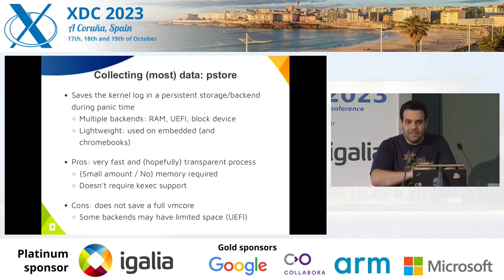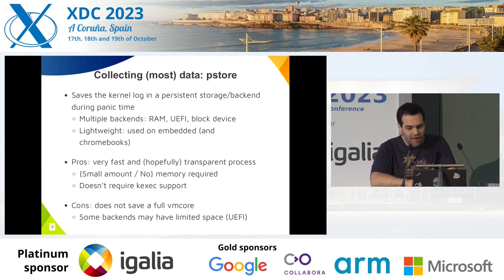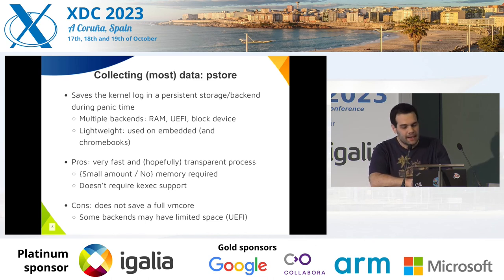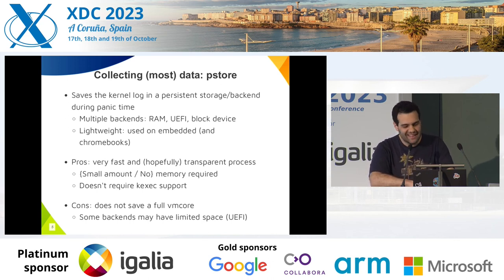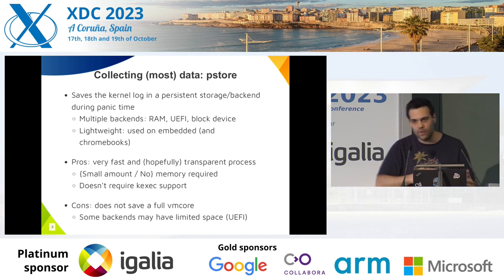The P-store mechanism is different — it collects most of the data differently. When a panic happens, P-store saves the message in a persistent area called a back-end. We have multiple back-ends: RAM, EFI variables, block devices. It's lightweight, used on embedded devices and Chromebooks. It does not require kexec support, which is good for embedded devices with secure boot like Qualcomm. It's very fast and transparent during panic time, and requires almost no memory — or none at all with an EFI back-end. For RAM, you can reserve just one or two megabytes. The con is that it does not save a full vmcore — it saves just the dmesg.